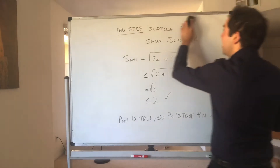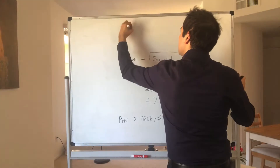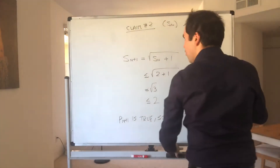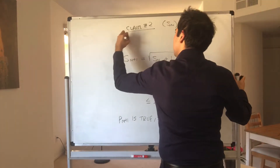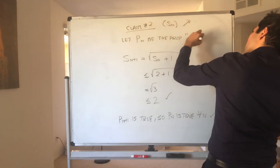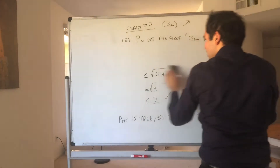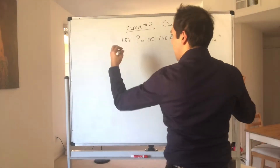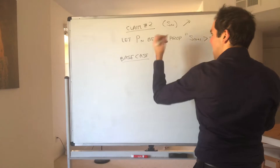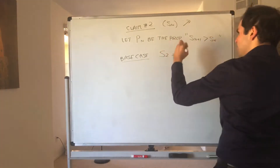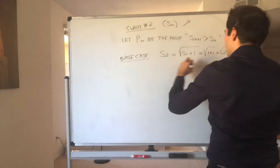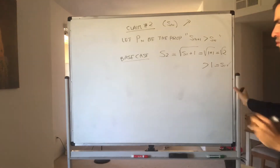Now what we want to show is that Sn is increasing — claim number 2. Let Pn be the proposition that Sn+1 is bigger than Sn. For the base case, S2 equals the square root of S1 plus 1, which is the square root of 1 plus 1, which is the square root of 2. And the square root of 2 is bigger than 1, which is S1. So the base case is done.